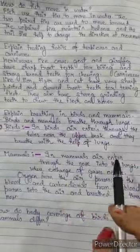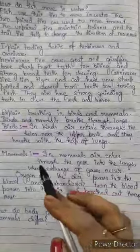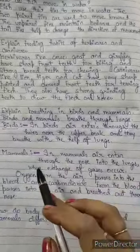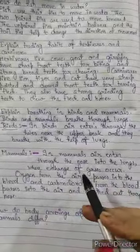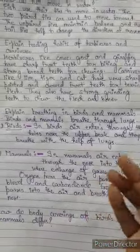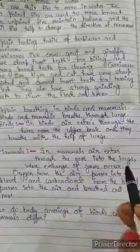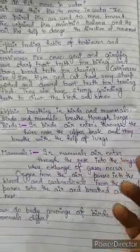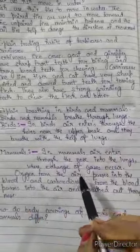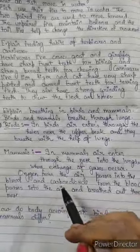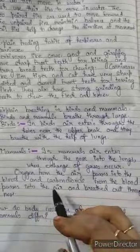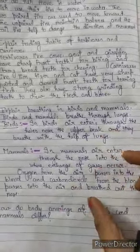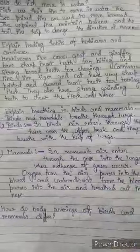In mammals, air enters through the nose into the lungs, where exchange of gases occurs. Oxygen from the air passes into the blood, and carbon dioxide from the blood passes into the air and is breathed out through the nose. In this way, mammals perform their breathing process.